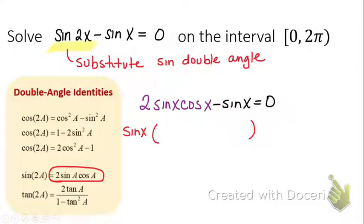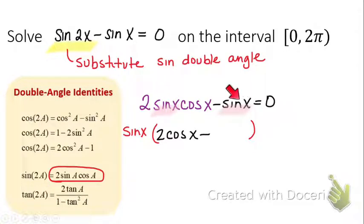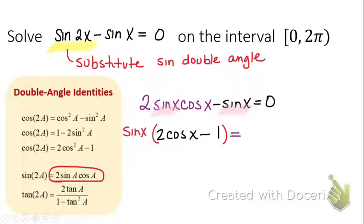When you factor something, that's division — so I'm dividing out the sine x. After factoring out sine x, I'm left with 2 cosine x, and when I take sine x divided by sine x, that's minus 1. So now we're ready to set both of these equations equal to 0.